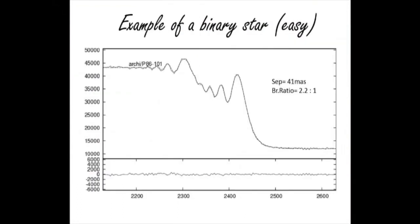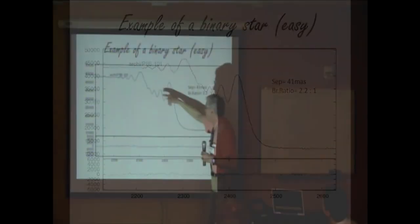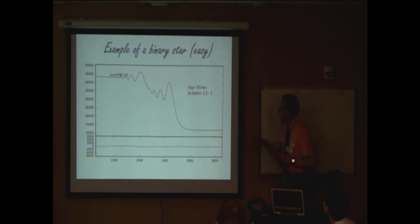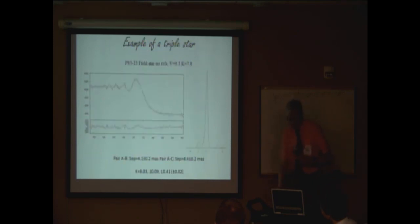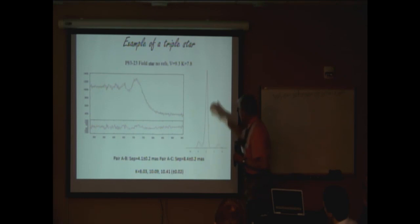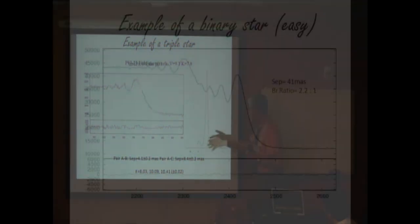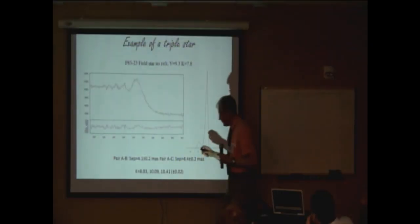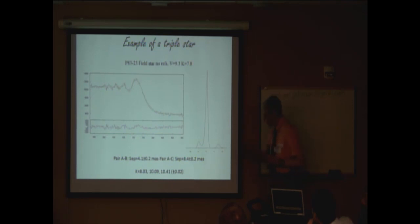Here's an easy binary star where you see the Fresnel diffraction pattern of the two different components clearly resolved, with a separation of 41 milliarcseconds. With an 8-meter aperture you can get really good signal-to-noise ratio. Here's an example of a triple star where it's not so obvious, but if you deconvolve the light curve you can back out the intensity function and vector separation, and you can see the primary star and two very clear steps. The components are less than the fringe spacing, which is why you don't notice it at first, but when you do the analysis they show up.